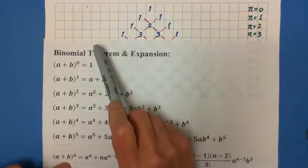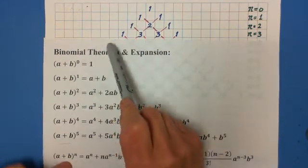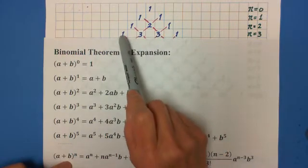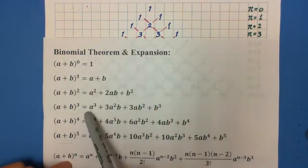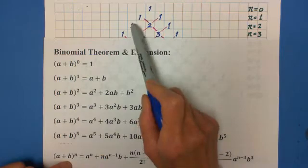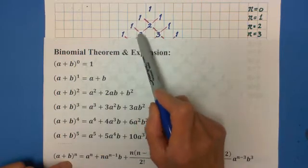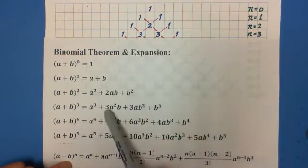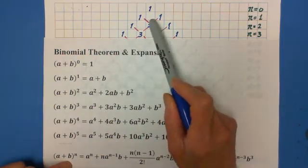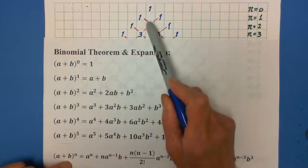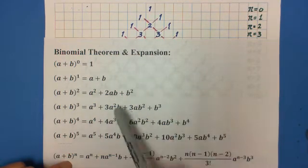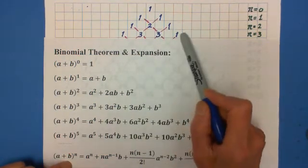If n equals 3, the first coefficient is 1. The second is 1 plus 2 equals 3. The third one is 2 plus 1 equals 3. The last one is 1. So the row is 1, 3, 3, 1.